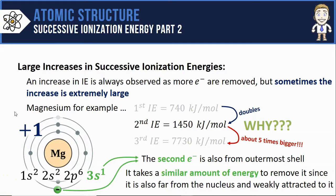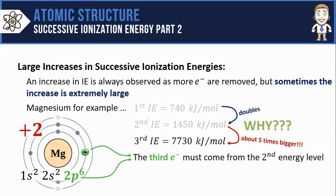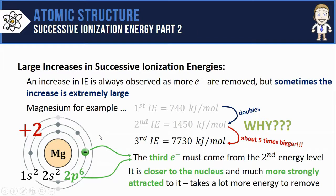After that 3s¹ electron has been removed, the atom now has a +2 charge and the electron configuration changes in a big way. So now to remove the third electron, it has to come from the 2p⁶ orbital, or in other words, it's coming from the second energy level. The second energy level means that it's closer to the nucleus, much more strongly attracted to that nucleus, and that's why it takes so much more energy to remove the third electron than it did the second.